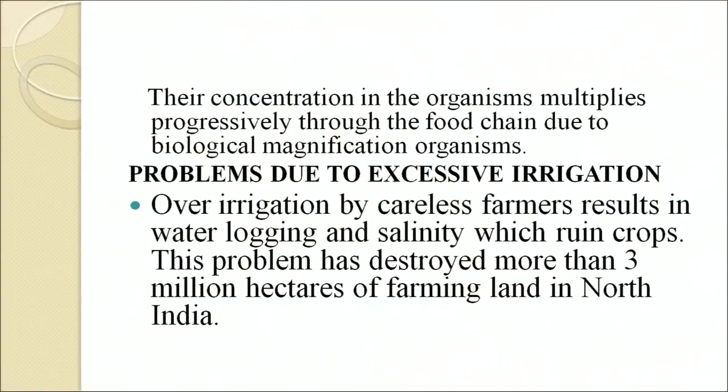Most of these chemicals are persistent, non-biodegradable and persist in the plant or animal body once they enter the food chain. Their concentration in organisms multiplies progressively through the food chain due to biological magnification.